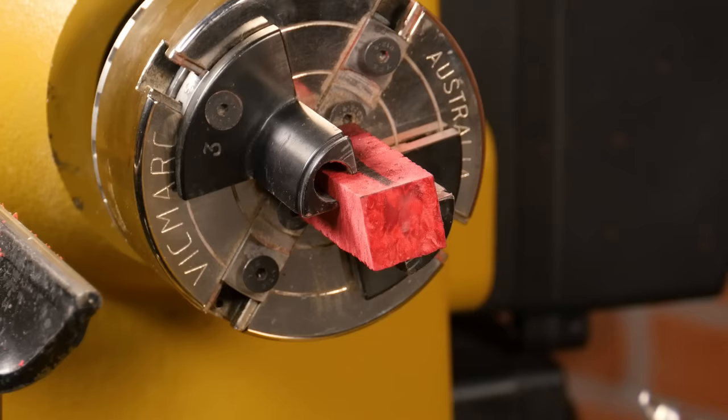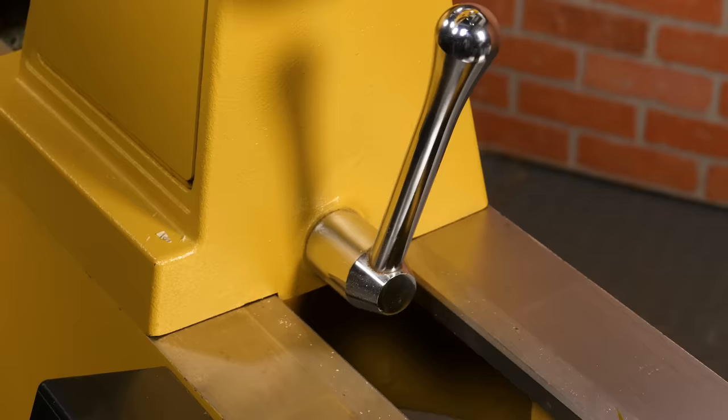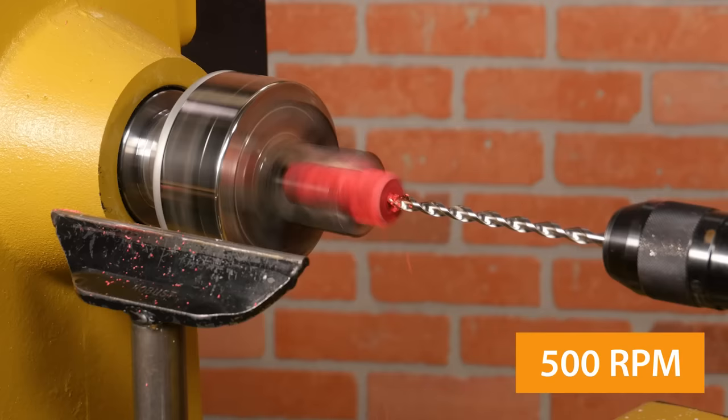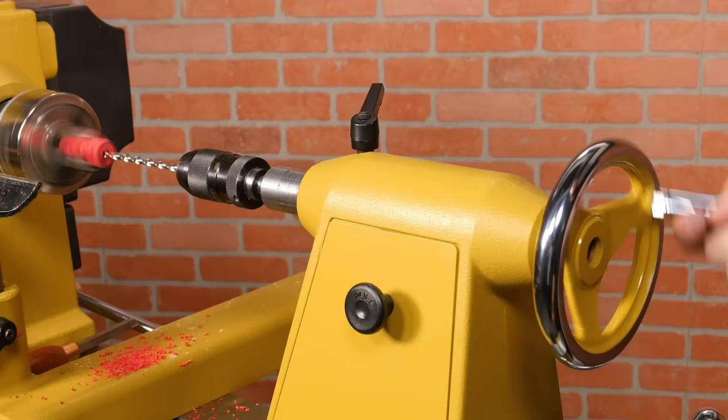Secure the drill bit in the tail stock using a drill chuck and move the tail stock up until the bit is almost touching the blank then lock down the tail stock. Now turn the lathe speed down to around 500 rpm then advance the bit slowly by turning the hand wheel on the tail stock.